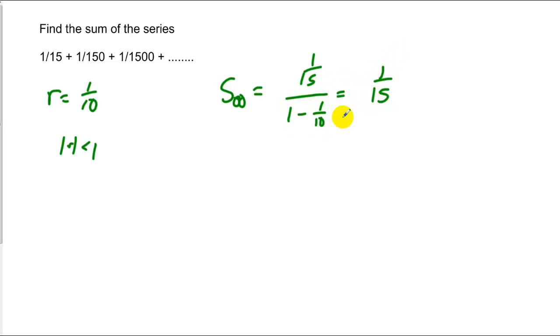And I get nine-tenths here, divided by nine-tenths, multiplied by the reciprocal. Get one-fifteenth times ten over nine. These reduce to three down here, two up here, and I'm left with two-twenty-sevenths.